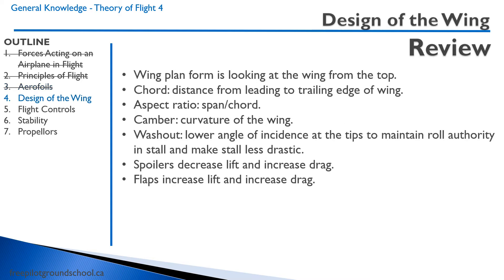The wing planform is the shape of the wing when looking from the top down onto the wing. The chord is the distance from the leading to trailing edge of the wing. The aspect ratio is the span divided by the chord. A wing that has a high span and a narrow chord would have a high aspect ratio — like a glider.